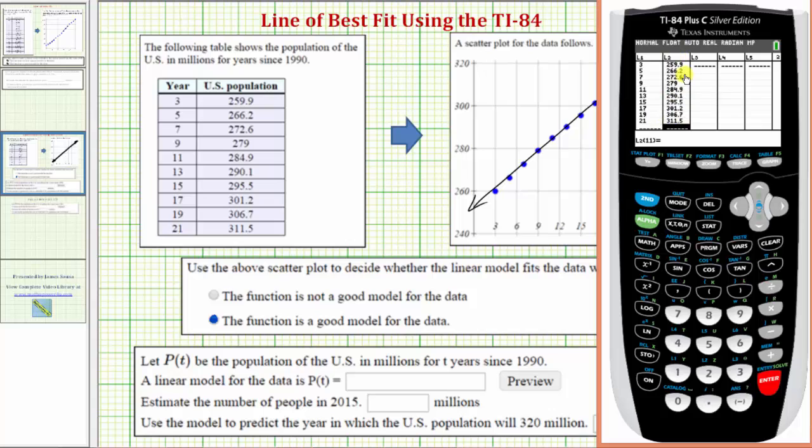To perform the linear regression, press stat, right arrow once to calculate, and then option four for the linear regression. We have the first column in L1, the second column in L2, which is good. We're not using a frequency list. We have the option of storing the regression equation in, for example, Y1. With the cursor in this row, press vars, right arrow to Y-vars, enter, and then enter on Y1. This will automatically store the regression equation in Y1. Press enter and enter one more time on calculate to perform the linear regression. Notice how A will be the slope of the linear function and B will be the vertical intercept.